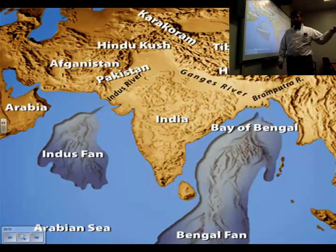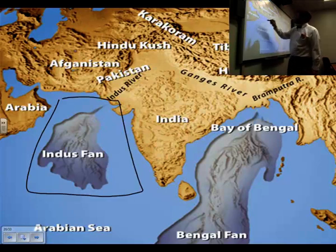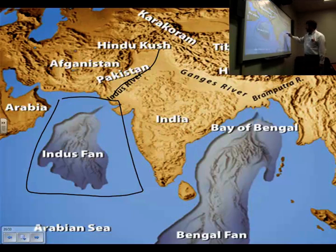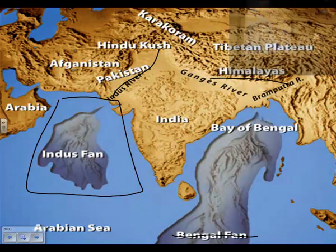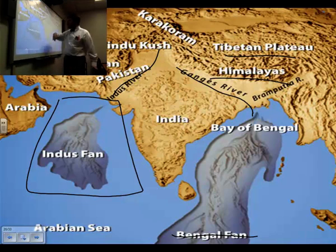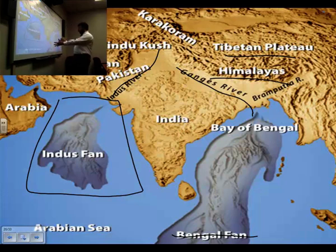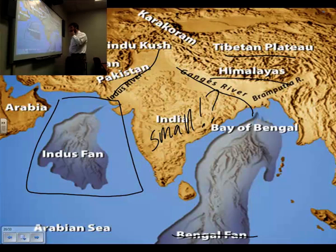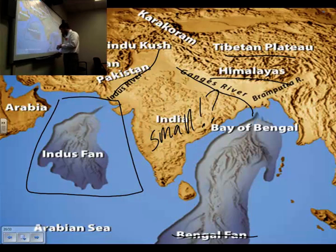Two good examples of deep sea fans: the Indus fan, which comes off the Indus River in India, and the Bengal fan in the Bay of Bengal, coming out of the Himalayas in the Bangladeshi-Tibet area, mostly off the Ganges River. These are huge rivers carrying all kinds of debris. The Bengal fan — you can see it in the picture — is actually bigger than India. There is more sediment deposited in that fan than there is land in India, which is remarkable.